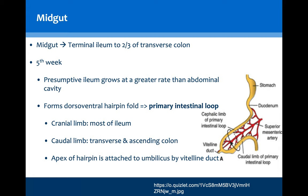Moving on to the midgut, which describes the portion of the gut extending from the terminal ileum to two-thirds along the transverse colon. It begins to develop around the fifth week where the presumptive ileum grows at a much greater rate than the abdominal cavity, forming a primary intestinal loop. This primary intestinal loop contains a cranial limb with most of the ileum and a caudal limb containing the transverse and ascending colon. The apex of this hairpin is attached to the umbilicus by a vitelline duct, with the cranial limb representing the small bowel and the caudal limb the large bowel.